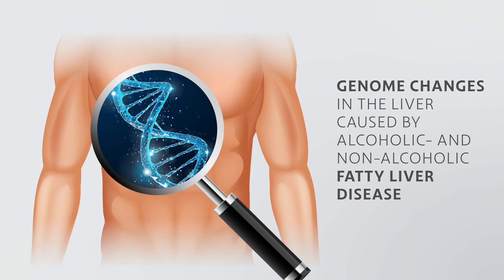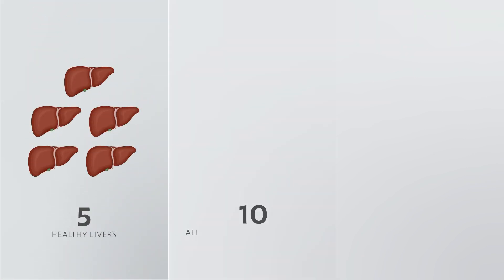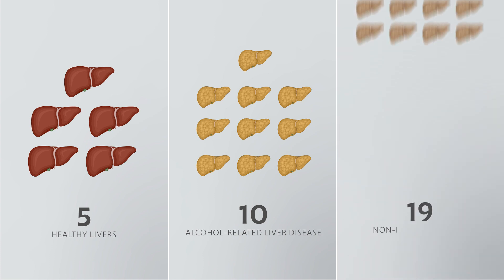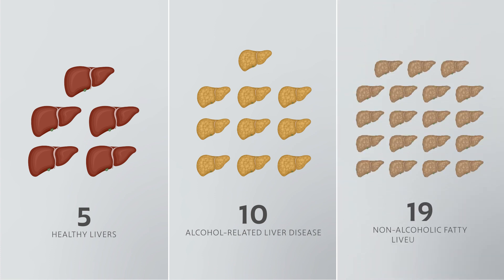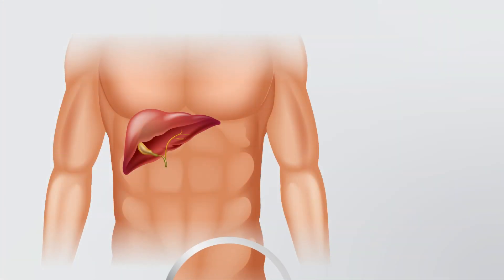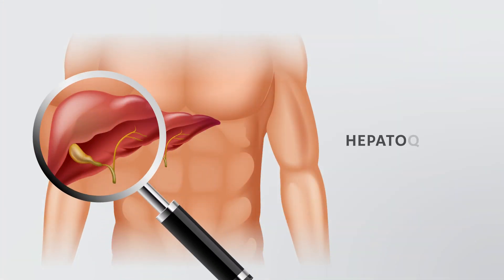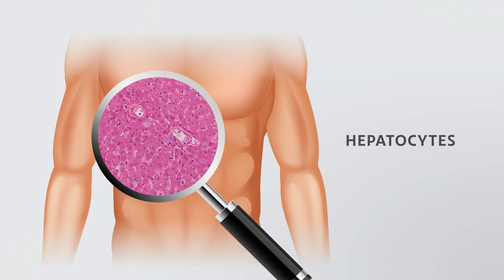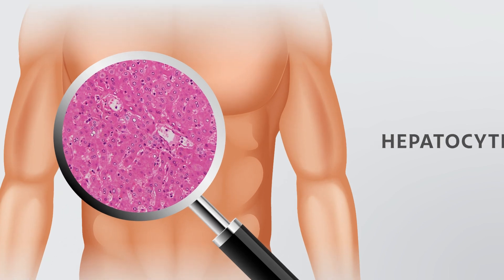They sequenced a total of 1,590 whole genomes from 34 livers, including 5 from individuals with healthy livers, 10 from patients with alcohol-related liver disease, and 19 from patients with non-alcoholic fatty liver disease. Dr. Hoar, Dr. Campbell, and their team studied groups of hepatocytes — the primary cells found in the liver — to identify gene mutations under evolutionary selective pressure in chronic liver disease.